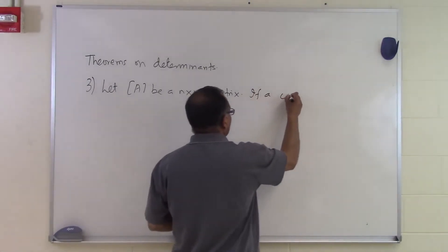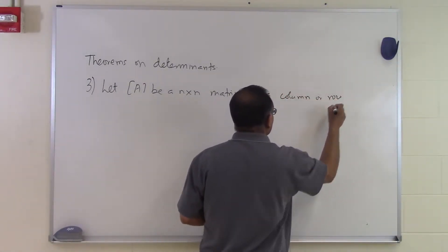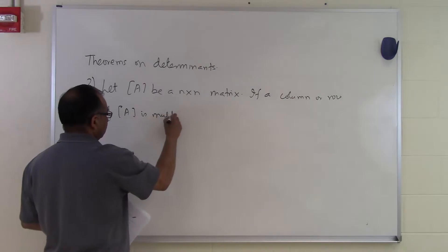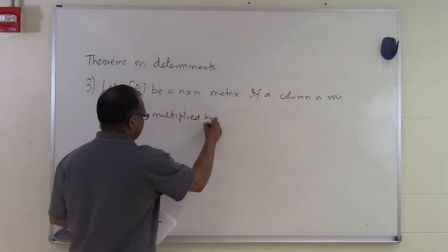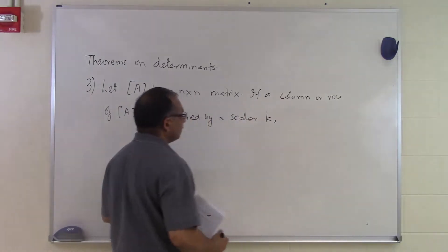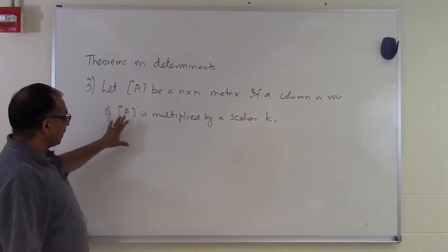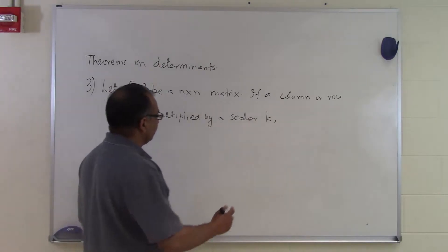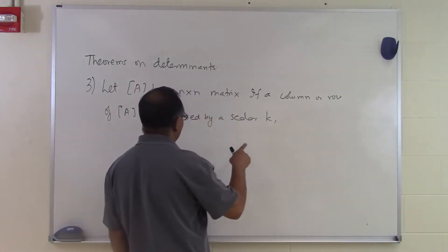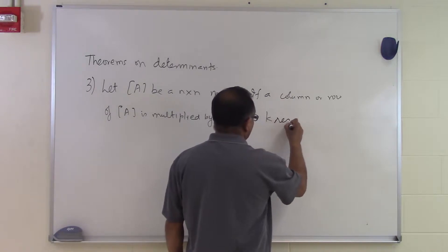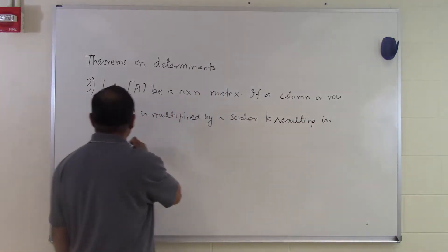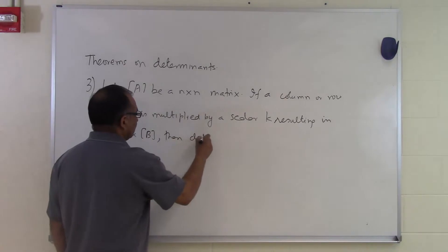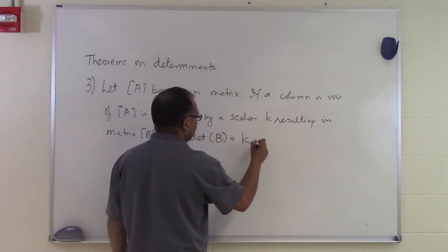If a column or row of A is multiplied by a scalar k, so what we are doing here is taking a real number k and multiplying some column or some row by that number k. And if a column or row of A is multiplied by a scalar k resulting in matrix B, then the determinant of B is the same as k times the determinant of A.